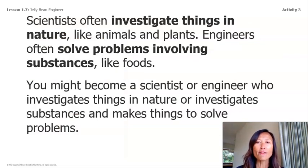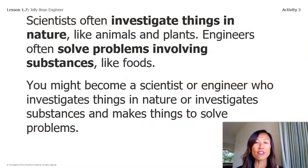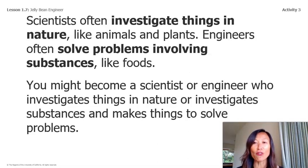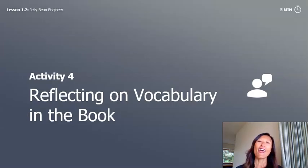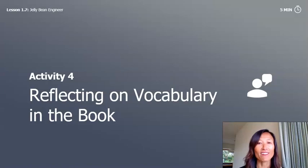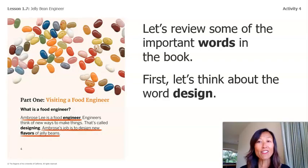Scientists often investigate things in nature like animals and plants. Engineers often solve problems involving substances like foods. You might become a scientist or engineer who investigates things in nature or investigates substances and makes things to solve problems. Activity 4: Reflecting on vocabulary in the book. Let's review some important words — first, let's think about the word 'design.'